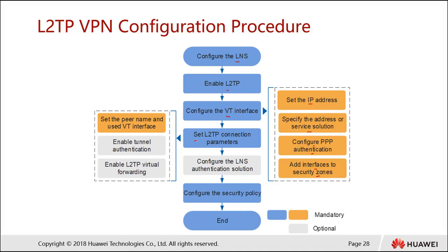Next, we configure the L2TP connection parameters — specifically setting the peer name used for the virtual template interface. There are two optional steps: enabling tunnel authentication, which is like an additional password just for the tunnel, and optionally enabling L2TP virtual forwarding. We can also optionally configure the LNS authentication solution. Finally, we configure the security policy and then configure the client.